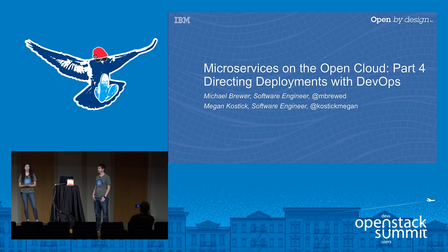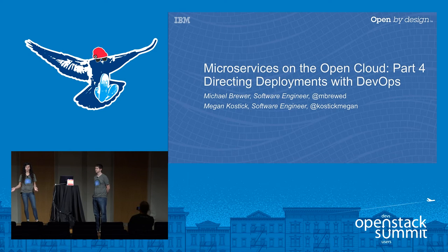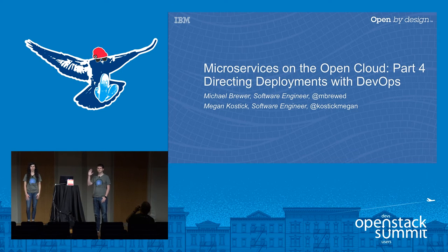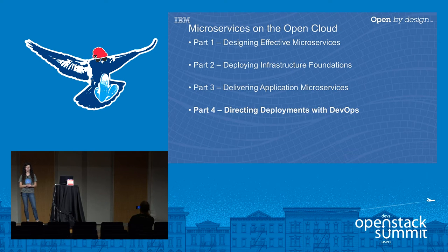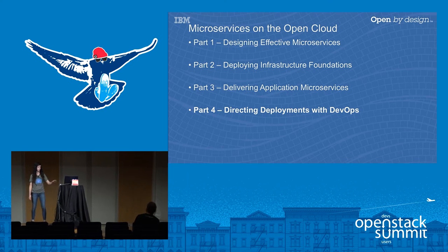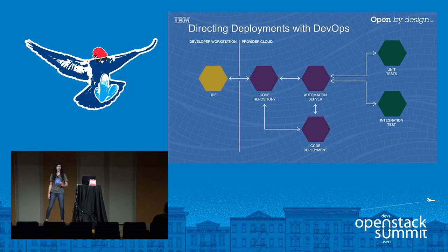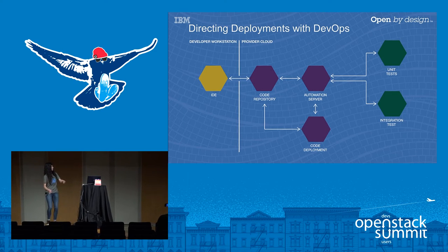Hi everybody and welcome to part four of microservices on the open cloud. We're going to be focusing on directing deployments with DevOps. My name is Megan Kostick, I'm a software engineer in the IBM cloud org, and this is my teammate Michael Brewer. So far today you've heard about designing microservices, how to deploy them, delivering applications using microservices, and now we're going to pull it all together and learn about how to direct your deployments with DevOps.